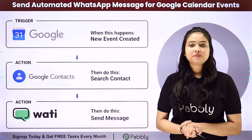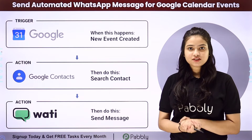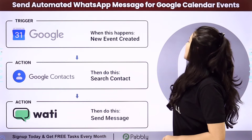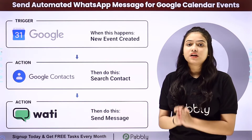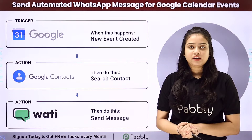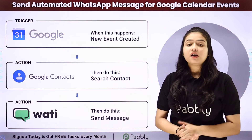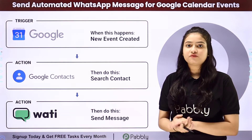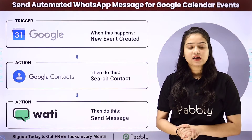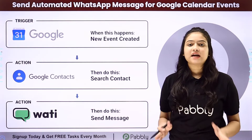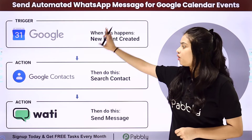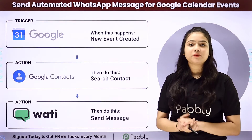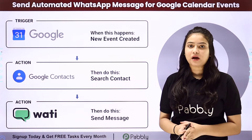Hello everyone, welcome back to Pabbly Connect. In this video, we are going to learn how to send automated WhatsApp messages for Google Calendar events. Suppose you want that whenever you create a new Google Calendar event and add a guest, you want to send an automated WhatsApp message to that guest informing them about the event details. We will integrate all these applications using Pabbly Connect.